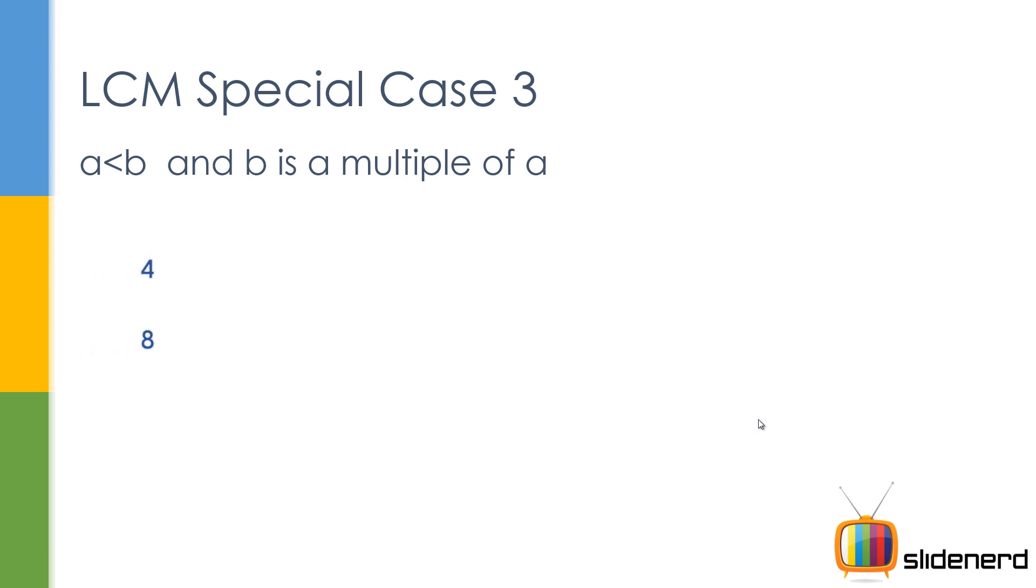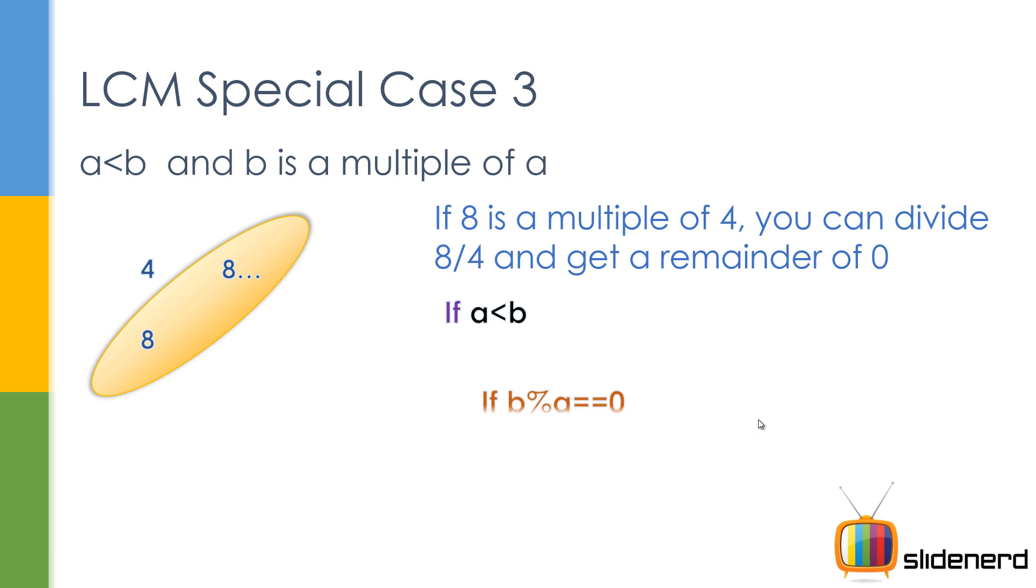Third, A is less than B. B is a multiple of A. As I told you, if you take 4 and 8, A is less than B. And if you take the multiple of 4, which is gonna be 8 itself, in that case, the LCM is 8. So let me go ahead and show you the conditions.